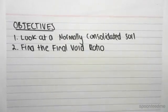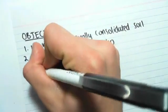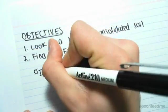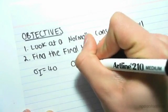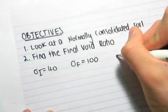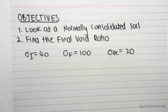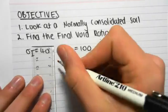So for example, we could be given, say, sigma initial equals 40, sigma final equals 100, and sigma pre-consolidated equals 20. So if I were to graph this, just like we did in the previous video.